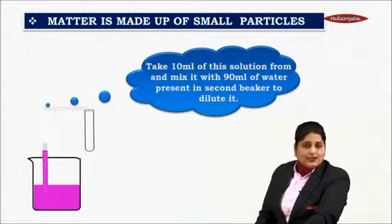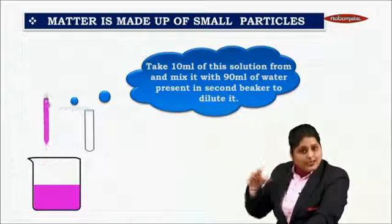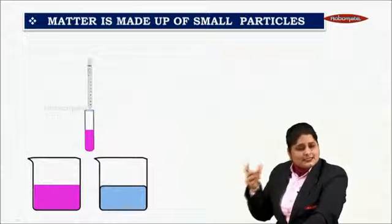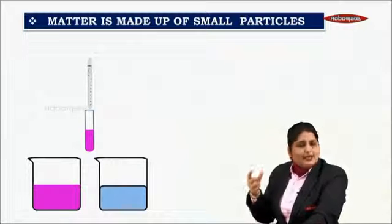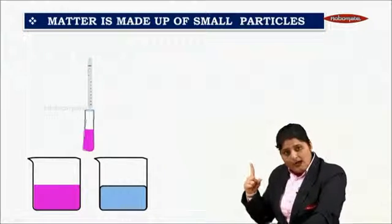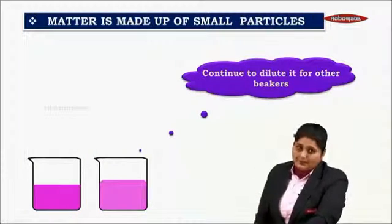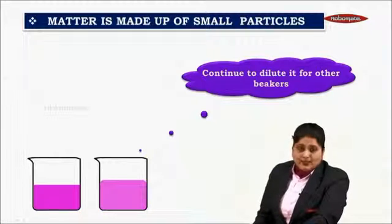So what we are doing is from the first beaker, we are taking 10 ml. We are putting it in a test tube which contains 10 ml of potassium permanganate solution from beaker number 1, and we are transferring this solution to beaker number 2.